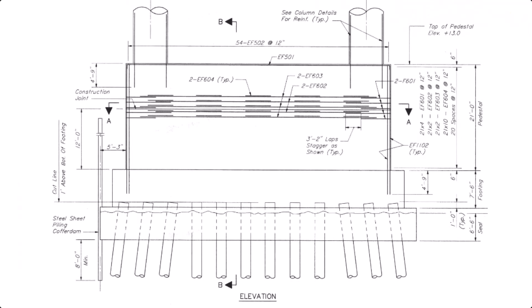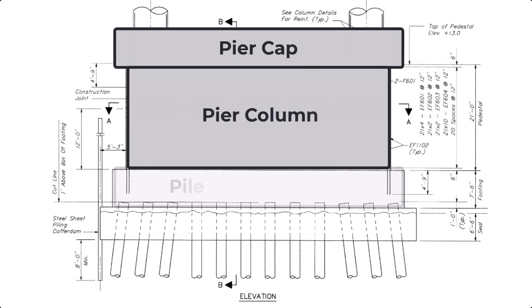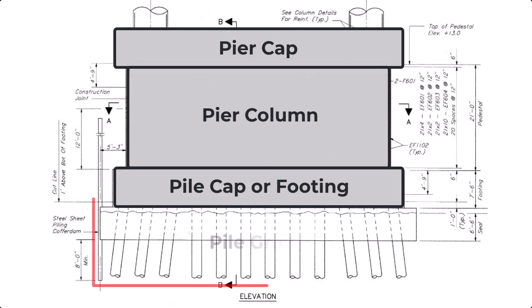Common components of a complex pier include the pier cap, the pier column, the pile cap or footing, and pile groups.